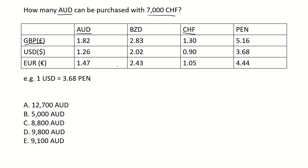Let's use the example to make sure we're using the table correctly. It says 1 USD equals 3.68 PEN — so 1 USD, if we go across to PEN, equals that value. So we can say the same for GBP: 1 GBP equals, and if we go across to CHF, then it will equal 1.30 CHF.